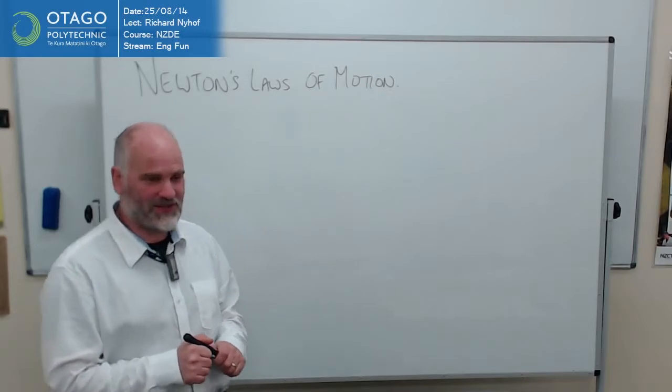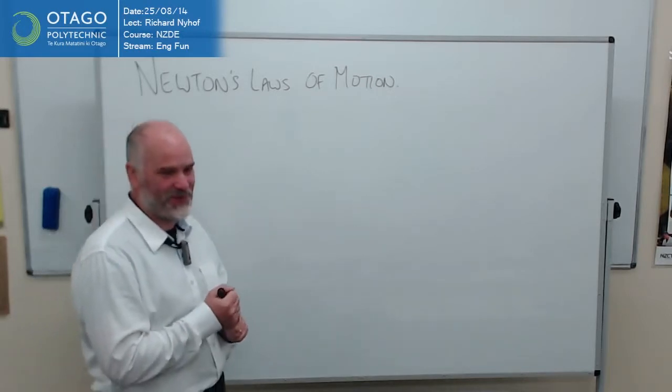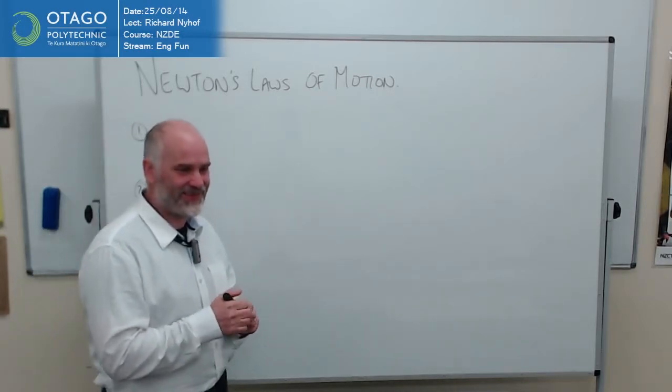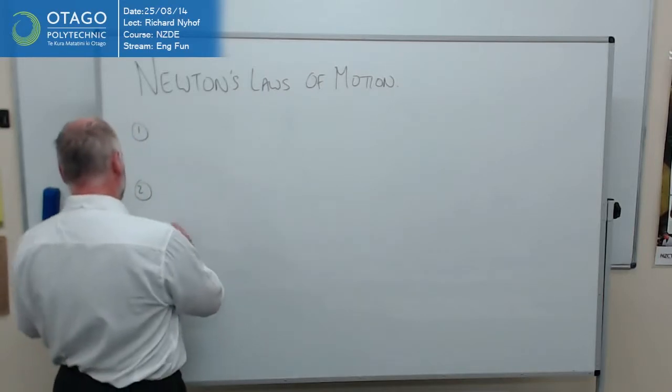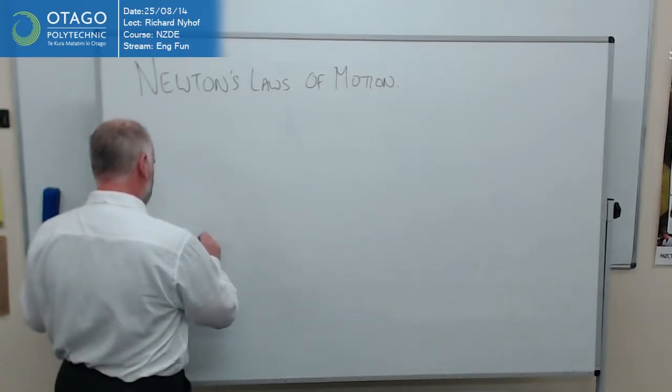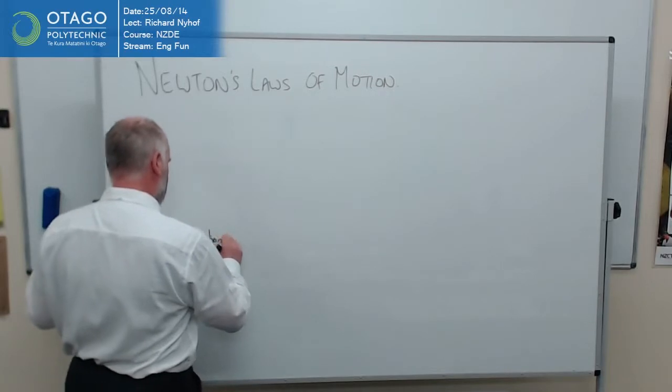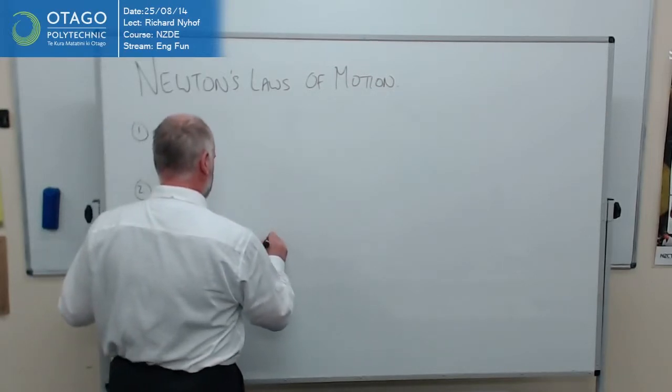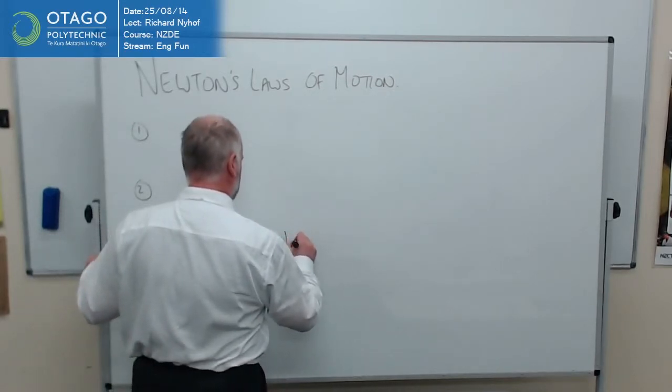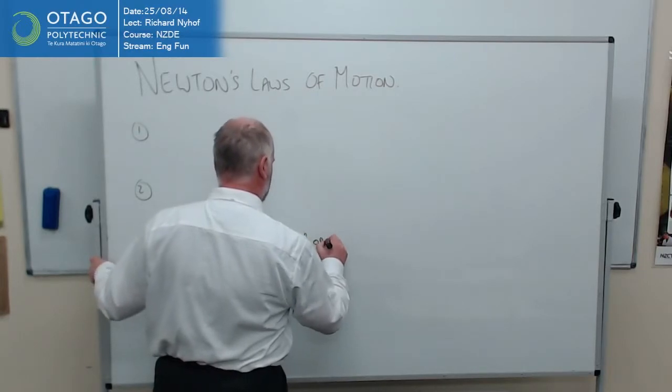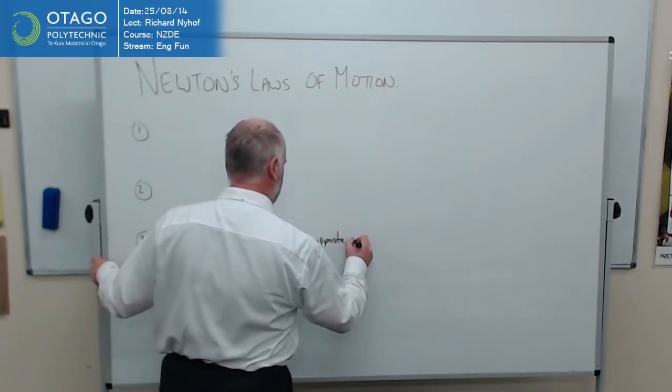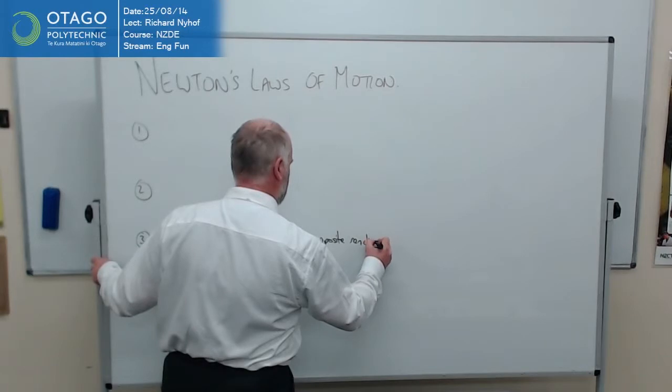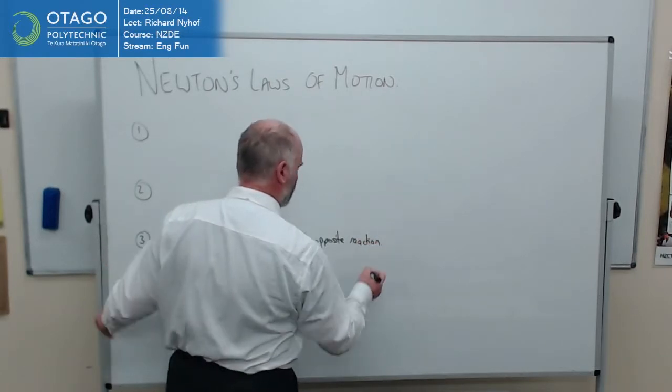The third one. We're going to start with the third one. Okay Nathan, what's the third one? So that's the general expression of it. Every action has an equal and opposite reaction.